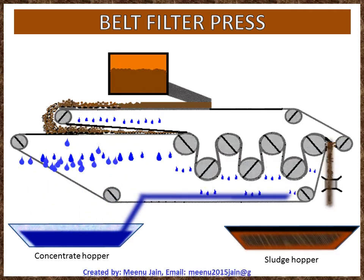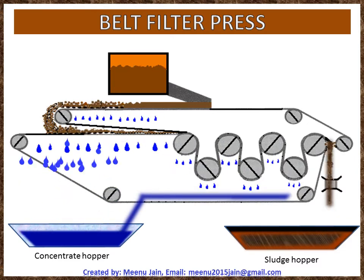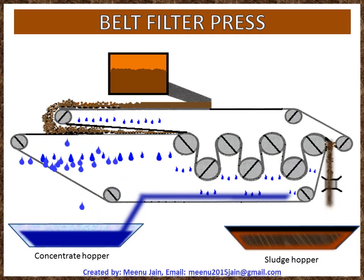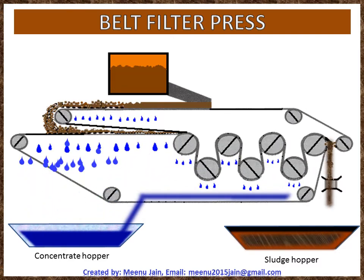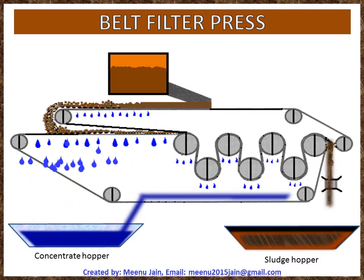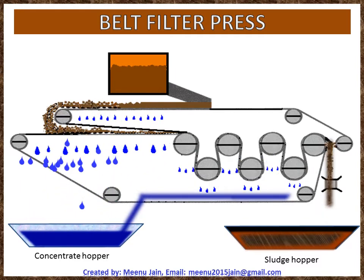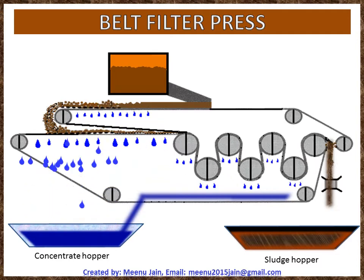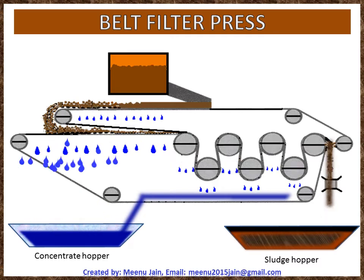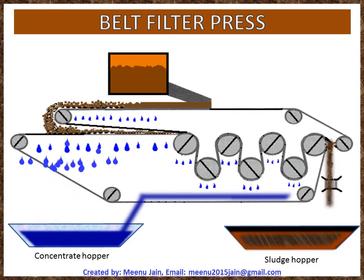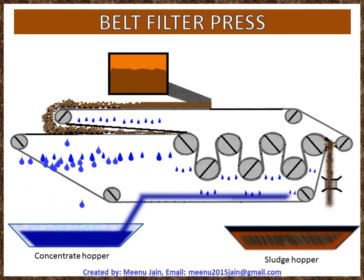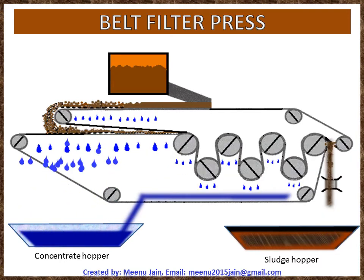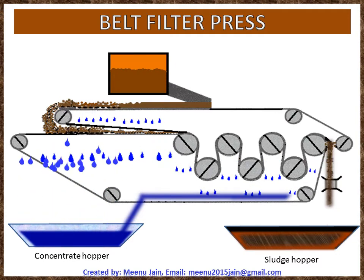The next sludge dewatering equipment is the belt filter press. First introduced in the United States in the early 1970s, it has become one of the predominant sludge dewatering devices and proved effective for almost all types of municipal wastewater sludge and biosolids. It is a continuous-feed dewatering device that uses chemical conditioning, gravity drainage, and mechanically applied pressure to dewater sludge. Conditioned sludge is introduced onto the gravity drainage section where it thickens, with majority of free water removed by gravity. Pressure is then applied in the low-pressure section, squeezing sludge between opposing porous cloth belts. The final dewatered sludge cake is removed by scraper blades and collected in a sludge hopper, with centrate collected separately.